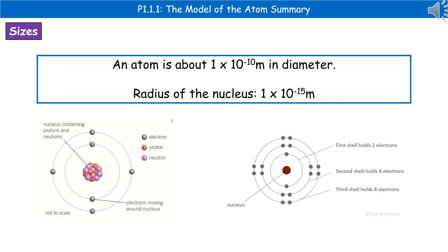The last thing we need to know is a couple of key sizes — and you've actually got to learn these. From the specimen and practice papers released by OCR so far, this has cropped up in the multiple choice section quite a lot. You need to know that an atom is about 1 × 10⁻¹⁰ metres in diameter. The radius of a nucleus is less likely to come up, but just in case: 1 × 10⁻¹⁵ metres.